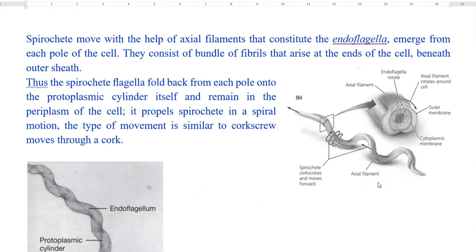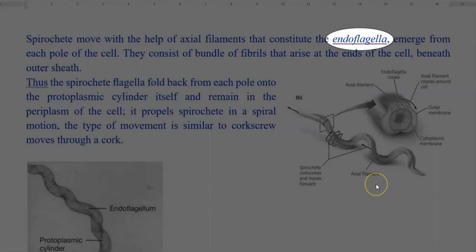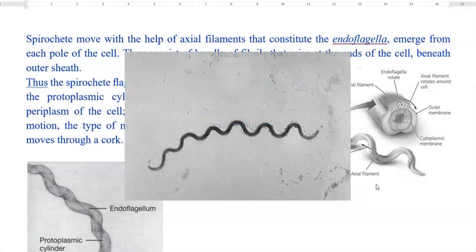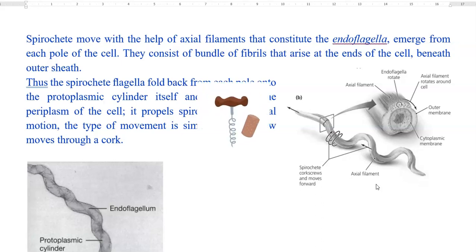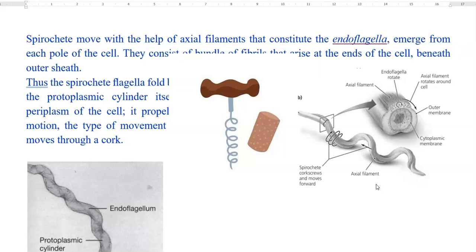Next, we look at other kinds of flagella, such as endoflagella. This kind of flagella occurs in spirochetes, which generally move with the help of axial filaments. These axial filaments consist of endoflagella emerging from the poles of the cells. They consist of bundles of fibers that arise at the ends of the cells, especially beneath the outer sheath. The spirochetes' flagella fold back from each pole onto the protoplasmic cylinder of the cell and remain in the periplasm. It propels spirochetes in a spiral motion, similar to a corkscrew moving through a cork.